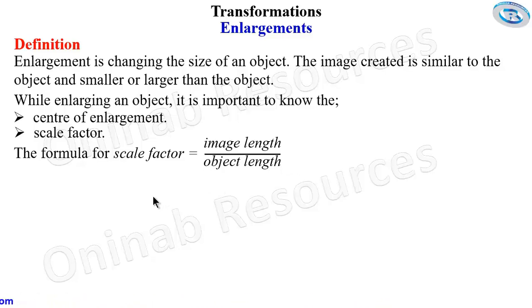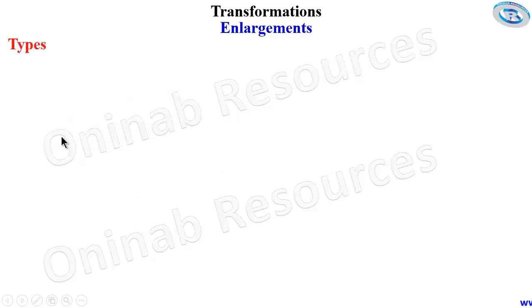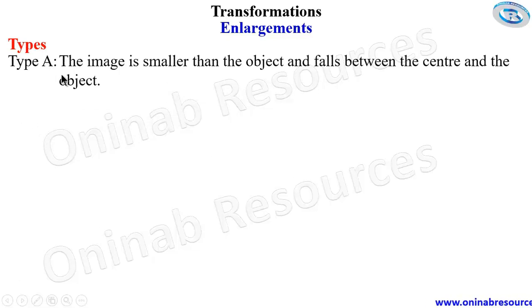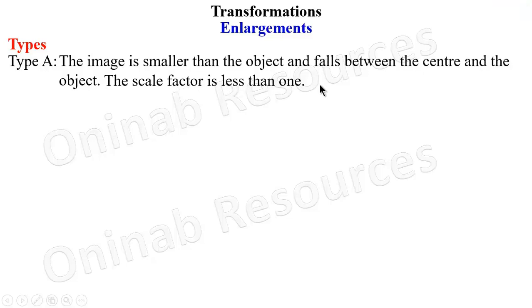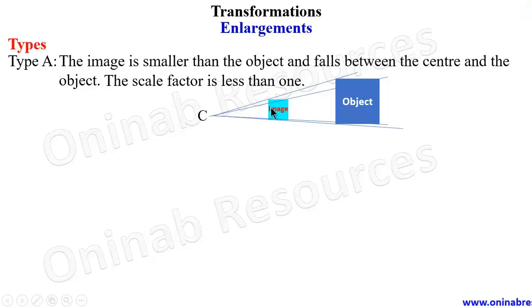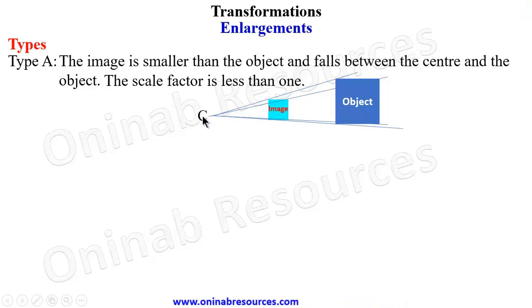The scale factor can be greater than one or less than one. We look at the various types of enlargement. Type A: the image is smaller than the object and falls between the center and the object. In this case the scale factor is less than one. Looking at the diagram, you can see the image is smaller than the object and falls between the center and the object.